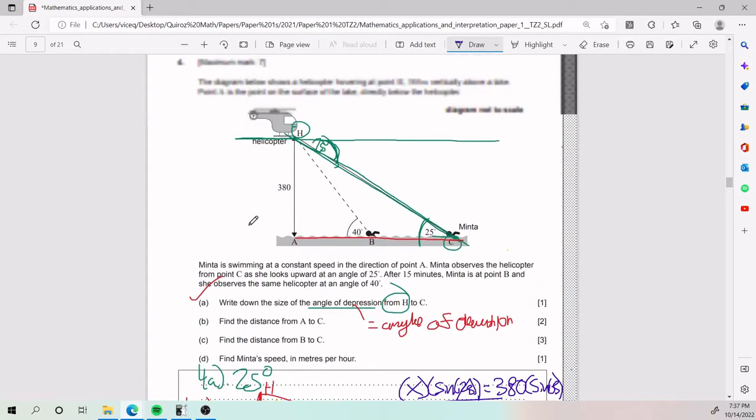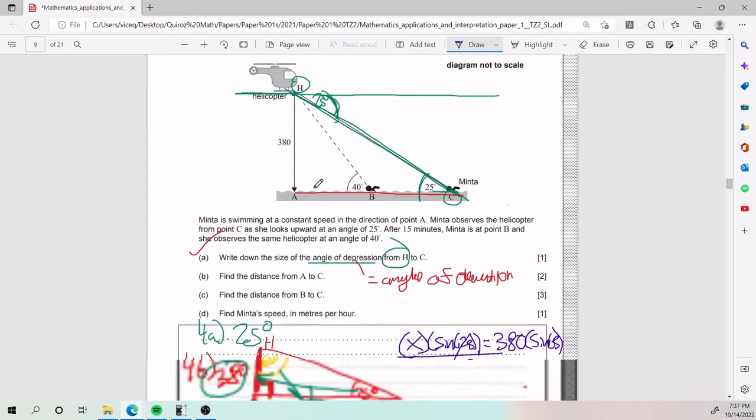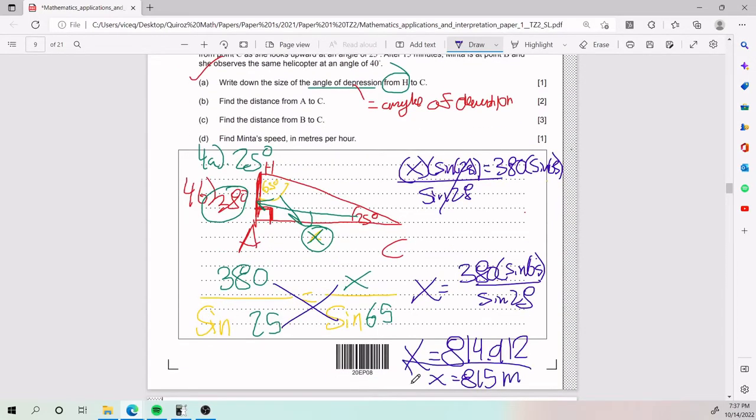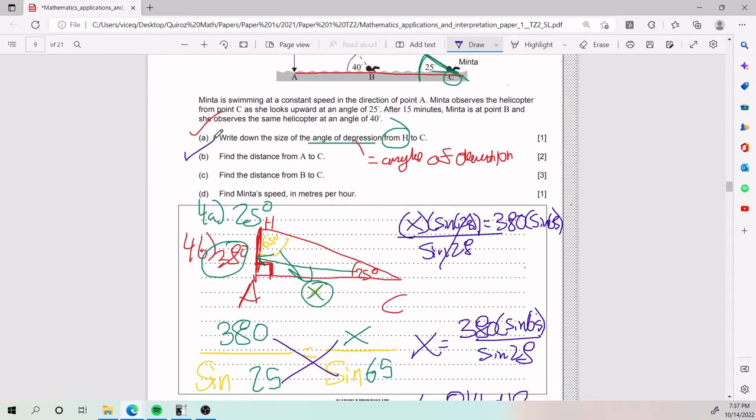If you want to round it up or whatever, you can leave it as 815. Don't forget the units. What were the units in this problem? We know that this is 380 meters, so this has to be meters as well. That is for the distance from A to C.